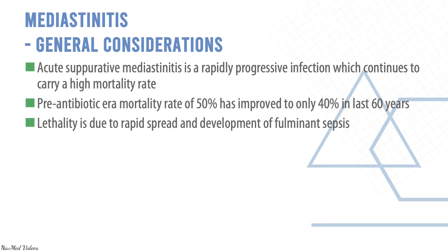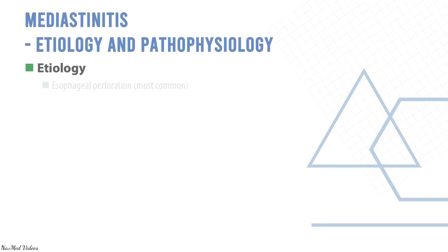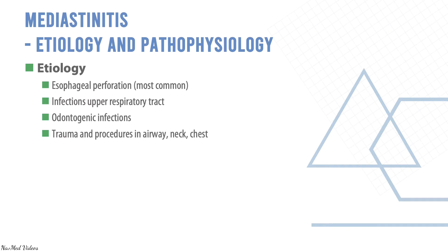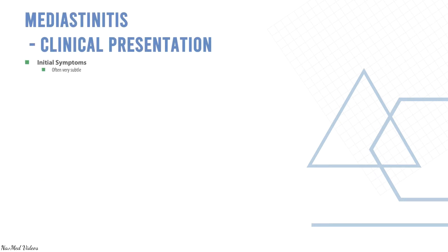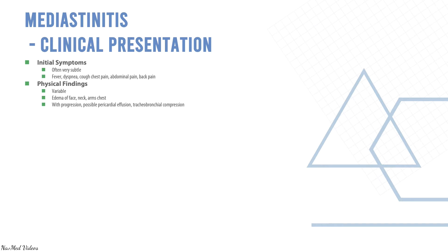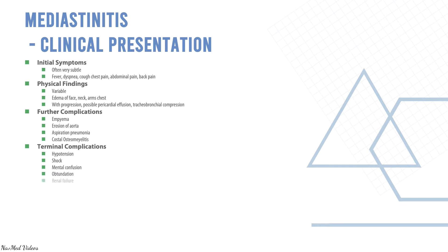Causes of mediastinitis include esophageal perforation, upper respiratory tract infections, odontogenic infections, trauma and procedures in the oropharynx, neck, and chest, and impacted foreign bodies. Microbiology is usually polymicrobial with aerobes and anaerobes. Initial symptoms are often very subtle: fever, dyspnea, cough, chest pain, abdominal pain, and back pain. Physical findings can include changes over the face, arm, neck, and chest; with progression there may be pericardial effusion or tracheobronchial compression.